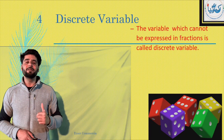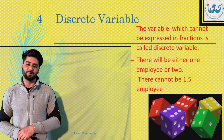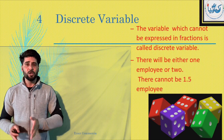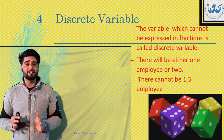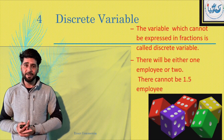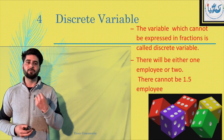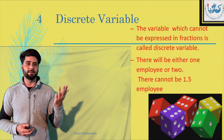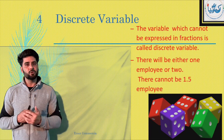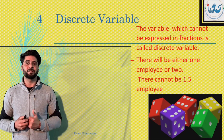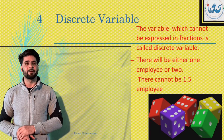There will be either one employee or two — there cannot be 1.5 employee. Wo variable joh hum fractions mein express nahi kar sakti hai, usi kehte hai discrete variable. For example, mere paas mobile phones hai — so mobile phone mere paas hai 3 ya 4, there can't be 3.5. So discrete variable wo variable hota hai joh hum fraction mein express nahi kar sakti hai.